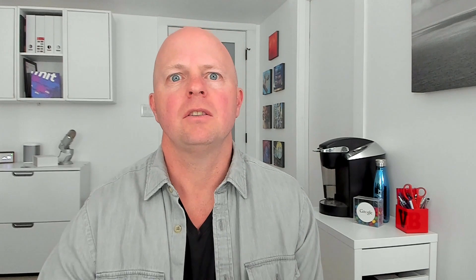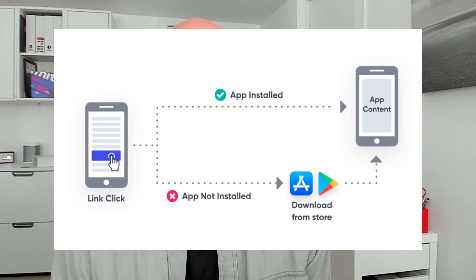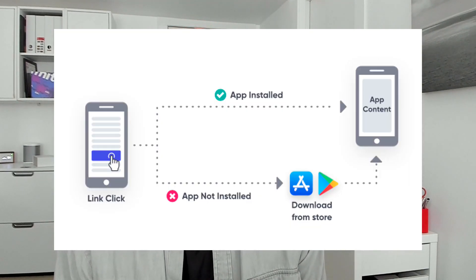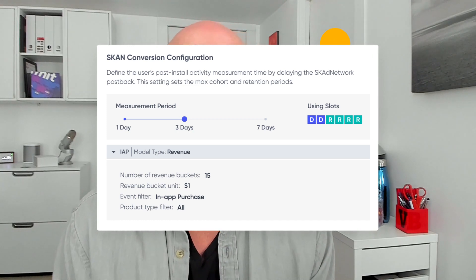Singular achieves attribution in two ways. One way is deterministic data on which devices saw an ad, installed an app, bought a power-up or a purse, or in the case of privacy-safe attribution methods like Apple's SKAdNetwork, which campaigns resulted in desired activity.